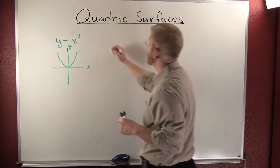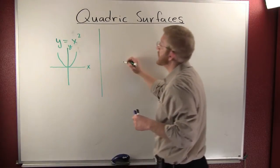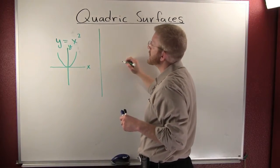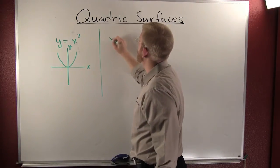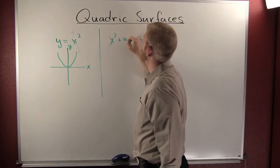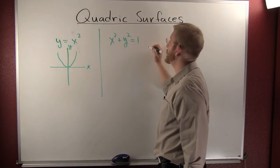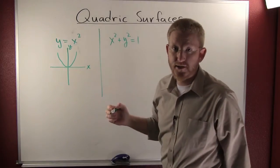Okay, the next one that we're going to take a look at is x squared plus y squared is equal to 1. That's a circle.